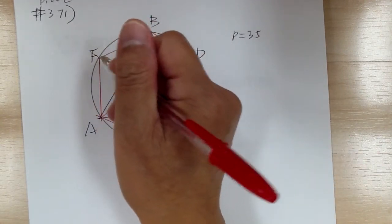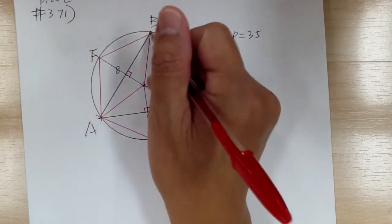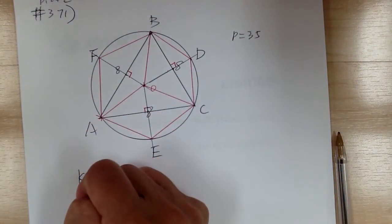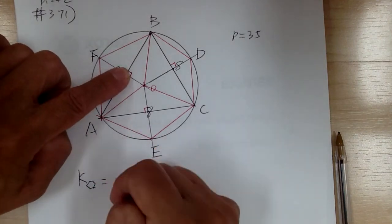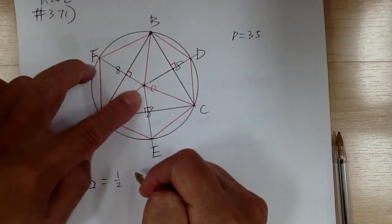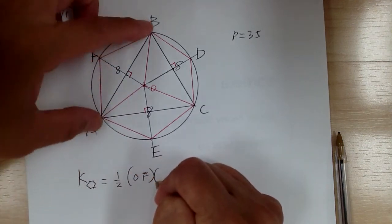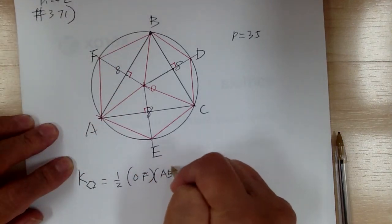So the area of this hexagon equals one-half OF times AB. Now for this quadrilateral over here, it would be one-half—again, diagonals—so it would be OE times AC.